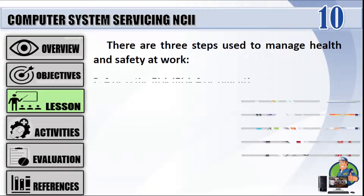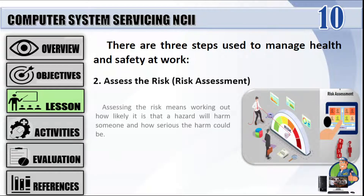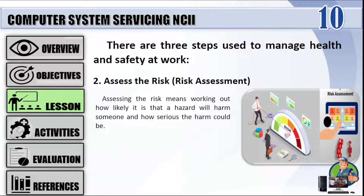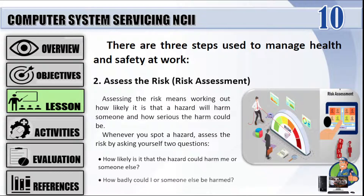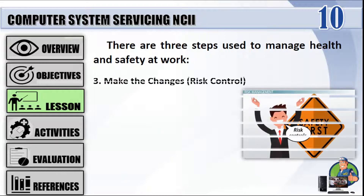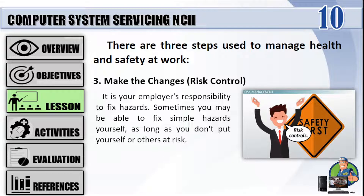Step 2: Assess the risk. Risk assessment means working out how likely it is that a hazard will harm someone and how serious the harm could be. Whenever you spot a hazard, ask yourself: how likely is it that the hazard could harm me or someone else? And how badly could I or someone else be harmed? Step 3: Make the changes — risk control. It is your employer's responsibility to fix hazards. Sometimes you may be able to fix simple hazards yourself, as long as you don't put yourself or others at risk. For example, you can pick up things from the floor to eliminate a trip hazard.